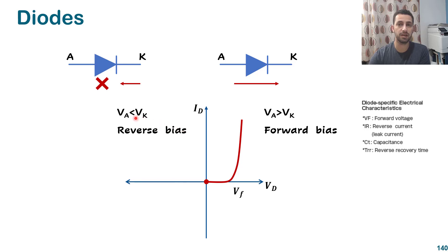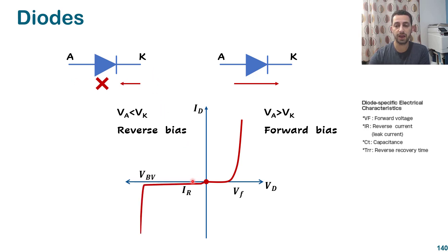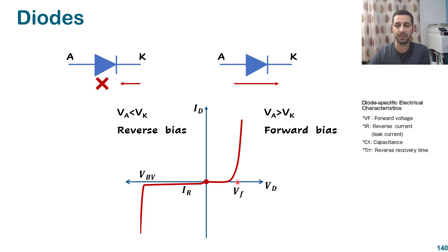Reverse bias applies when the voltage of the anode is less than the voltage of the cathode, and at that time the current has no chance to go backward. The IV curve has this shape where a very tiny current can go through the diode in the reverse bias operation, and that reverse current is called the reverse current or leakage current.